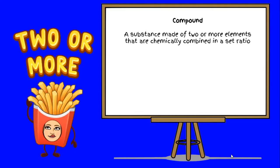Now let's move on to compounds. When a molecule contains more than one element, it is called a compound. A compound is a substance made of two or more elements that are chemically combined in a set ratio.